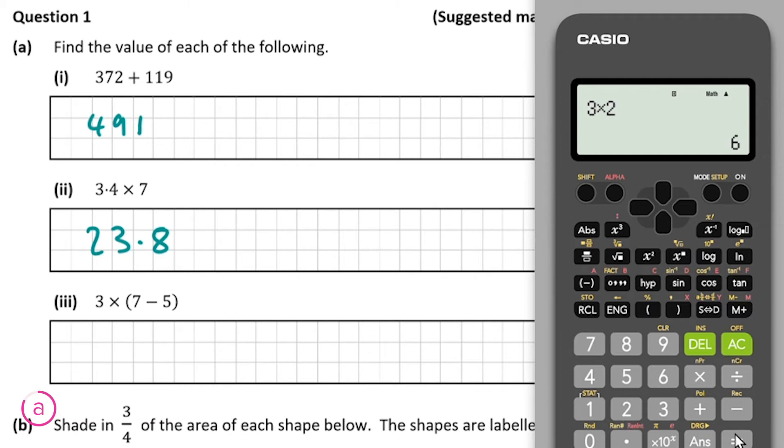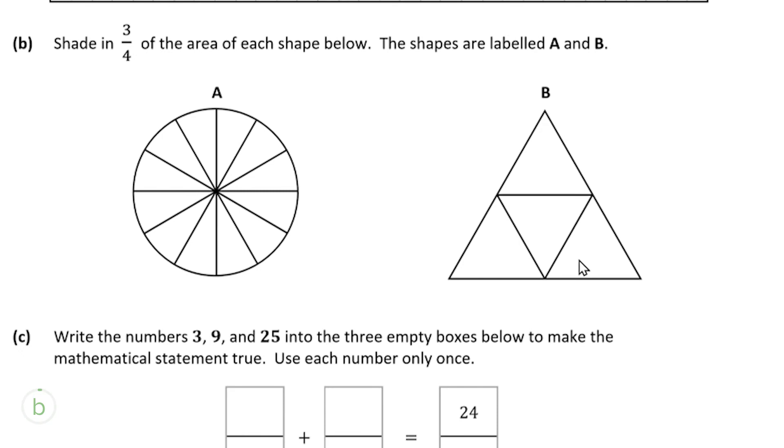However, if on the day you have a total blank and forget what seven minus five is, or we have something trickier inside those brackets, so we'll have the three multiplied by opening bracket seven minus five closing bracket, pressing equals we'll get the same answer of six.